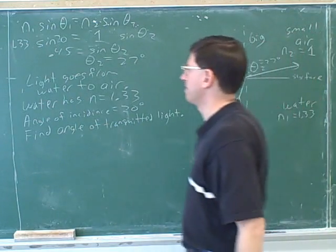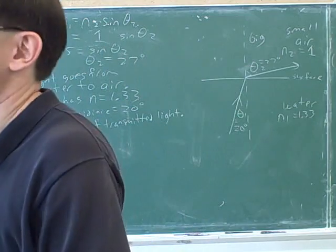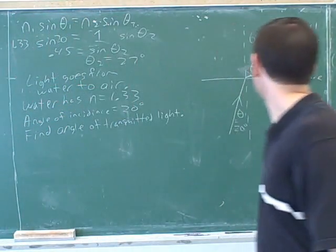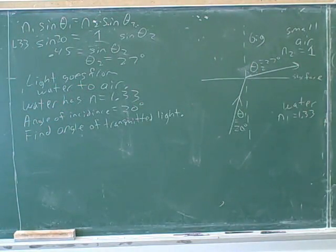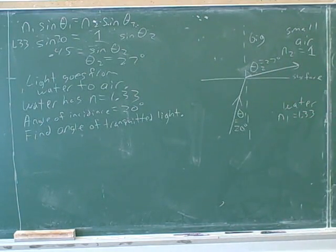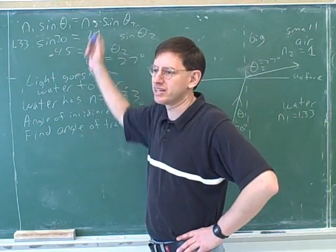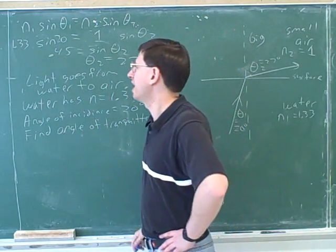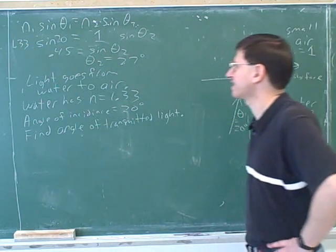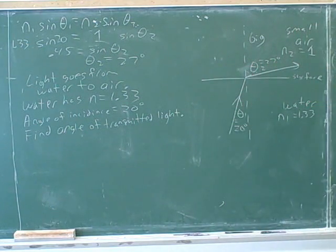One thing to watch out for is making sure you're in degrees mode on your calculator. You were in degrees mode, but in the future that's something to watch out for. So we figured out theta 2 was 27 degrees. The easy way to get confused here is to plug numbers in on the wrong side. It's probably most intuitive to put incidence on the left and the refracted angle on the right.